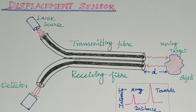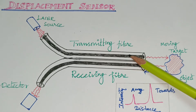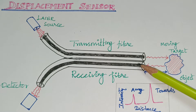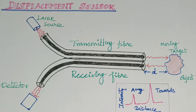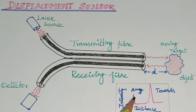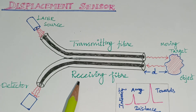What is the principle behind this Displacement Sensor? The light is sent through the Transmitted Fiber and it is made to fall on the Moving Target. The reflected light from the Target is sensed by the Detector. Here, it determines how far or how near the object is. This is the graph showing the intensity of light from the Displacement Sensor — it indicates the distance of the object. This is the principle.